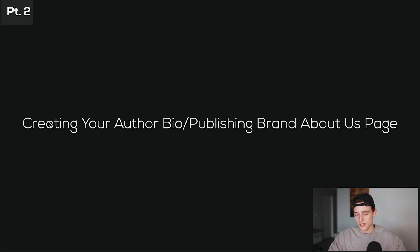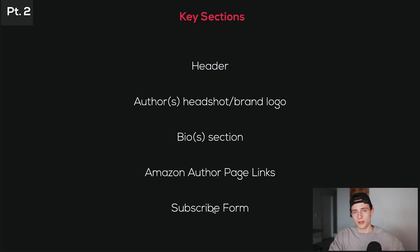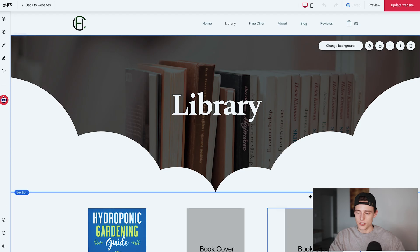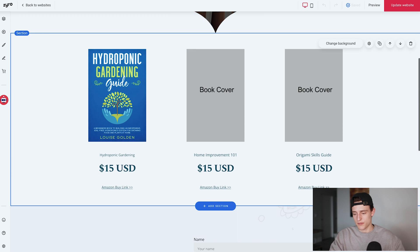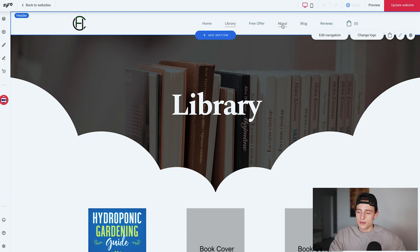Let's jump into the tutorial. Part two of three: creating your author bio or publishing brand About Us page. Let's have a quick look at what we need to include on this page. Key sections are going to be a header, an author headshot or brand logo, a bio for the author or the brand, Amazon author page links — if you don't have an Amazon author page, search that up after this video — and finally, at the bottom, we'll talk about adding a subscribe form. Last time we finished on the library page, where we feature all of our books. Let's go over to the About Us page now in the Zyro editor.